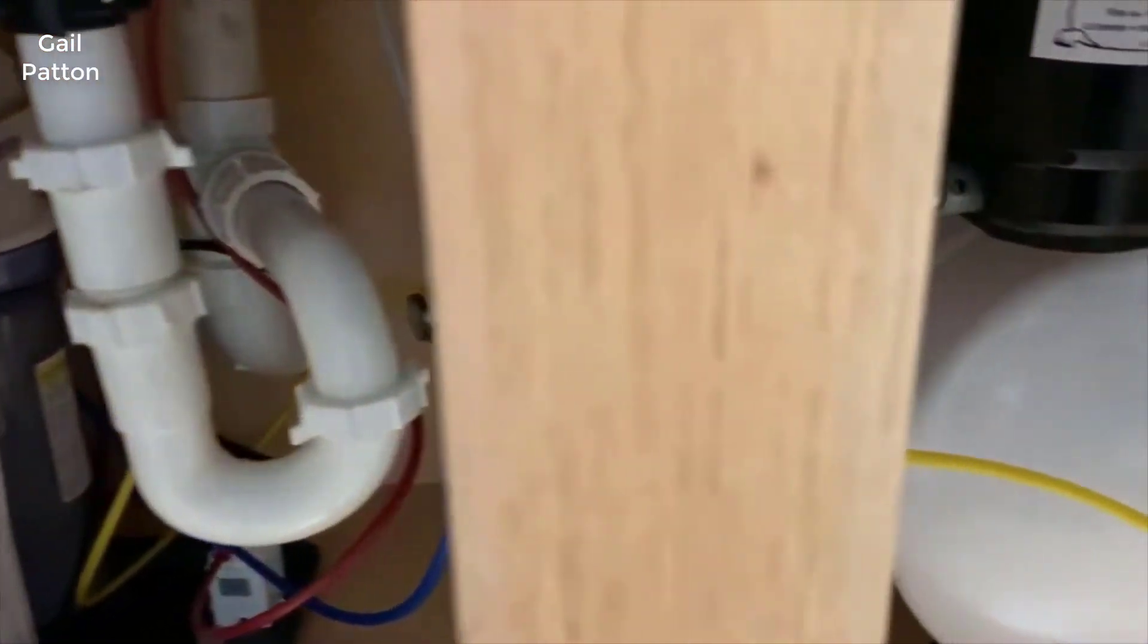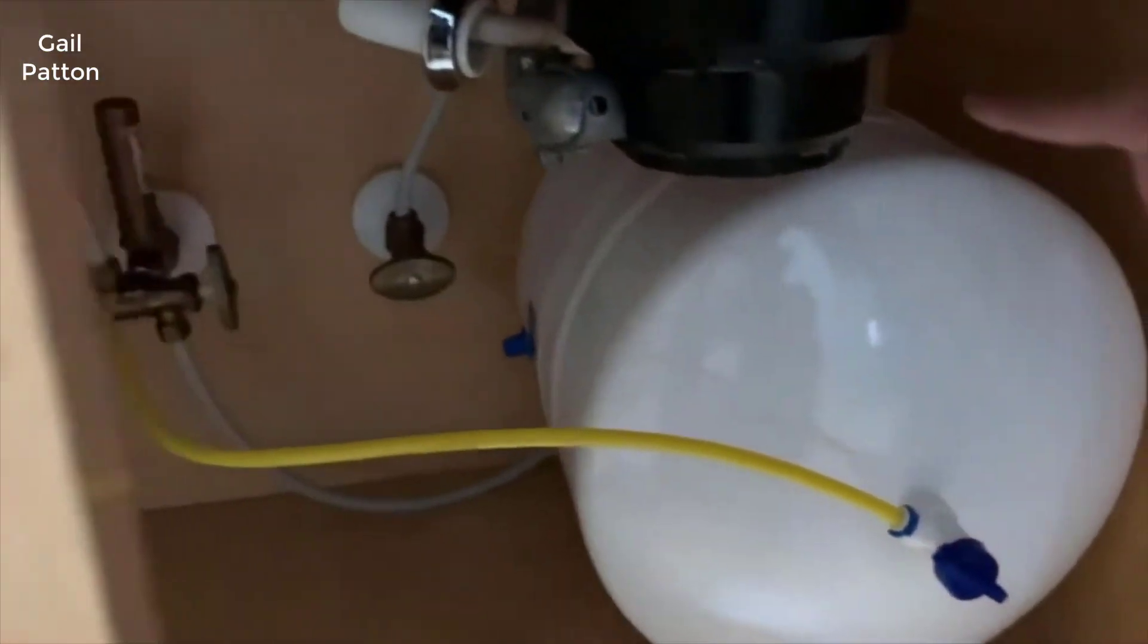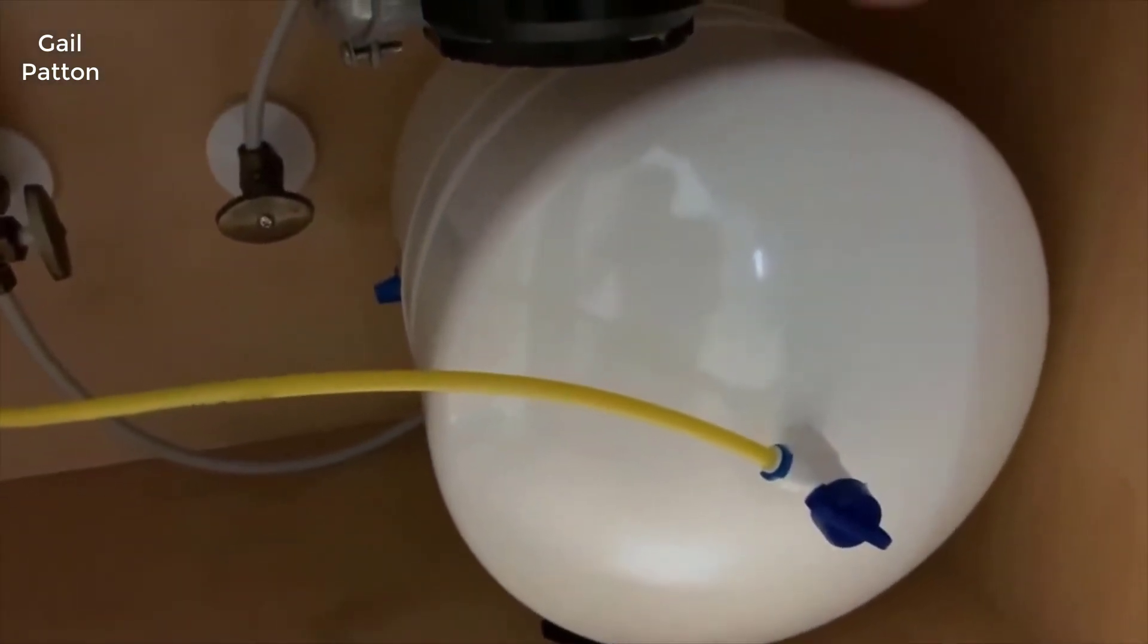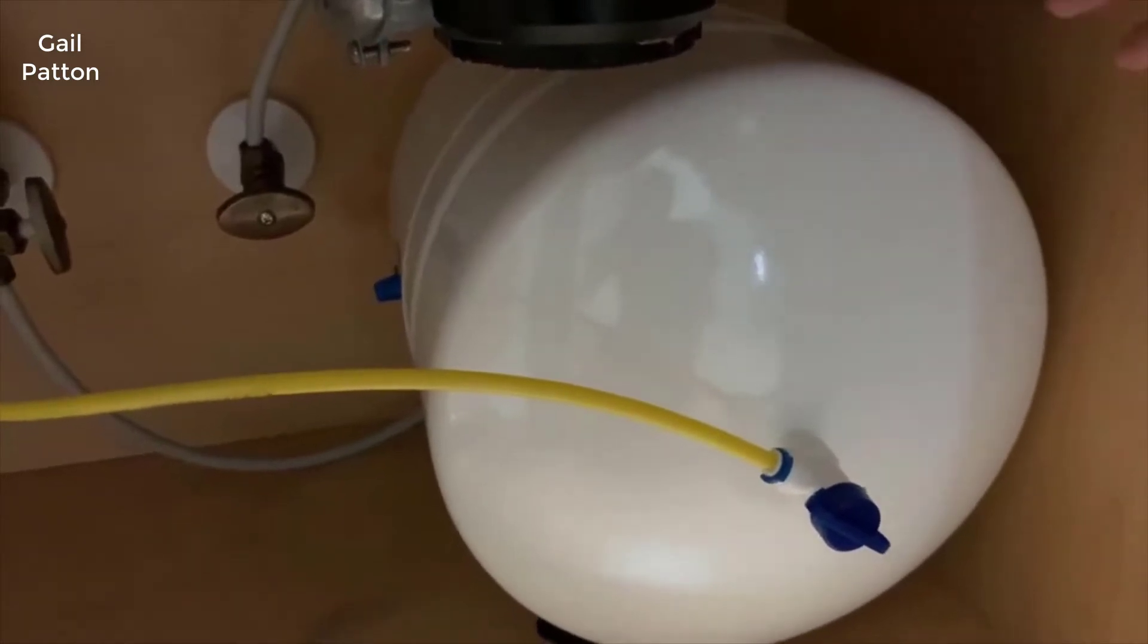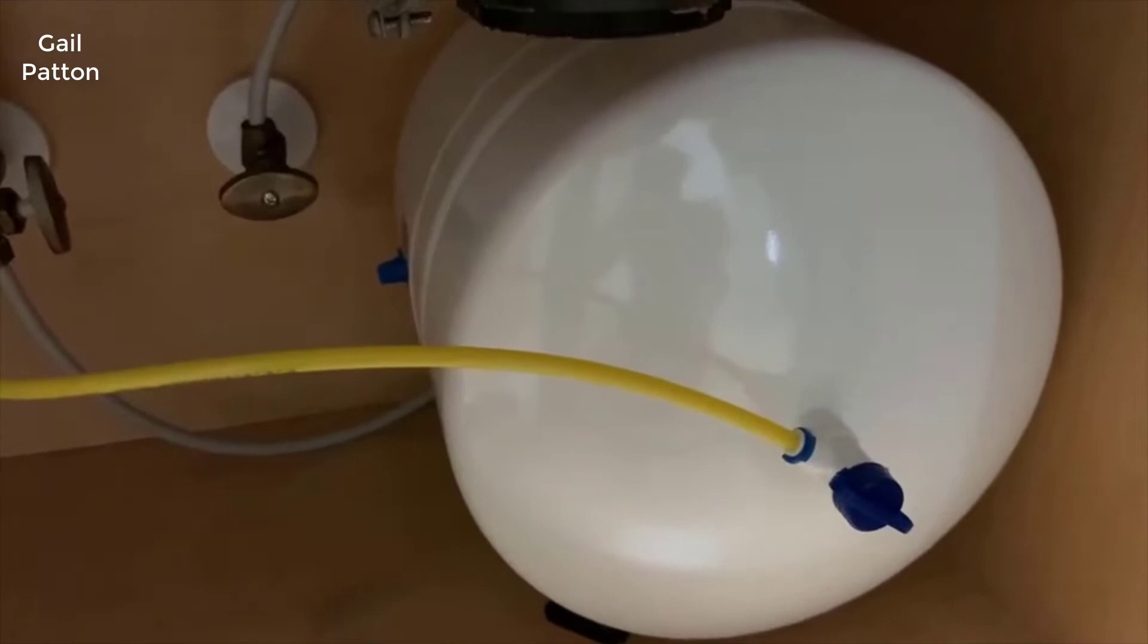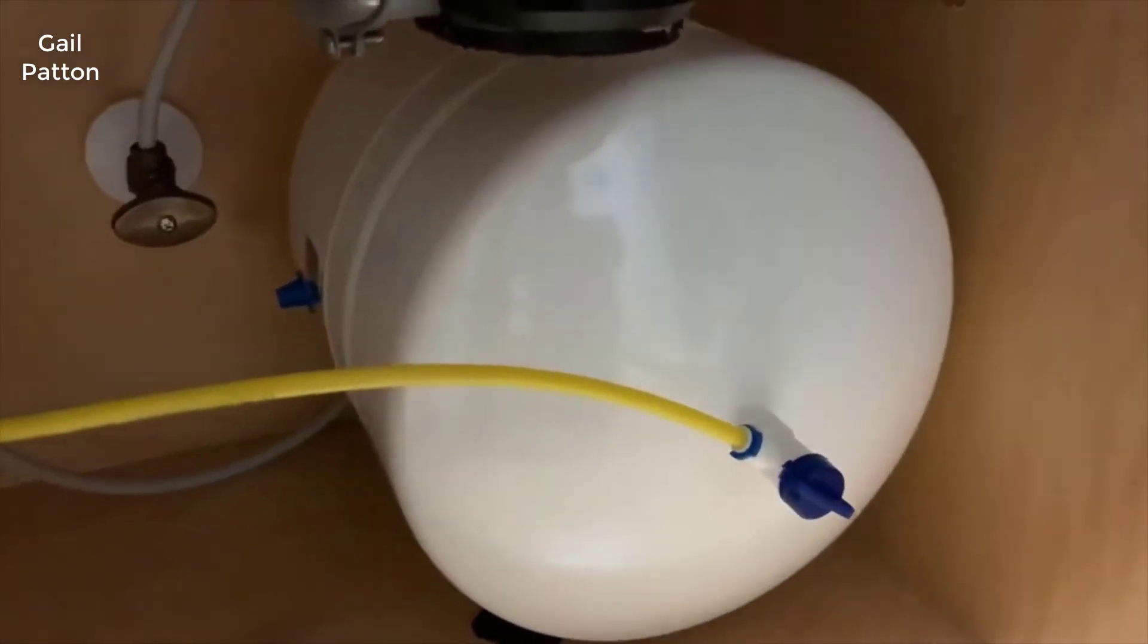Over on this side is the holding tank. The holding tank can either be positioned on its side or straight up and down, depending on how much room you have under your cabinet.